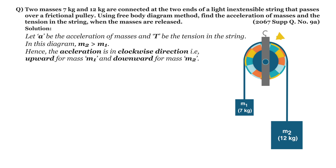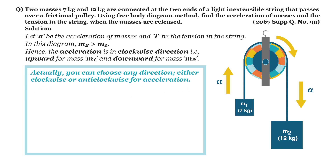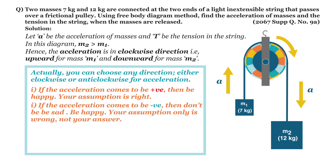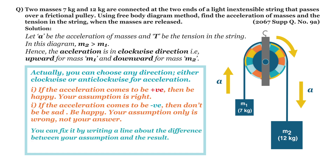Hence, by using our personal intuition, we can say that the acceleration is in the clockwise direction — that is, upward for mass m1 and downward for mass m2. You can choose any direction, either clockwise or anti-clockwise, for acceleration. The sign of the final answer will verify whether your assumption is correct. If the acceleration comes out positive, your assumption is right. If it comes out negative, only your assumption is wrong, not the answer — you can fix it by noting the difference.